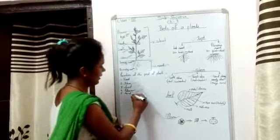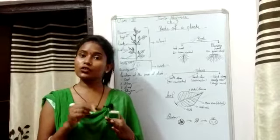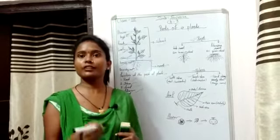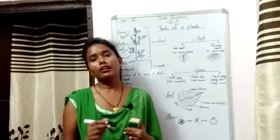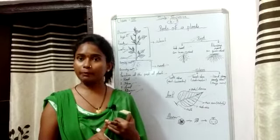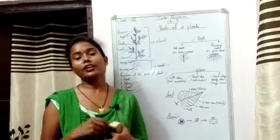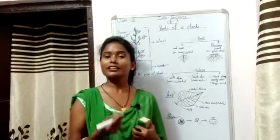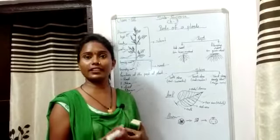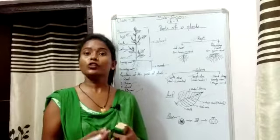Third point: Seed. The flower changes into a fruit, and the fruit contains seeds. Seeds are responsible for the reproduction of plants — if we plant a seed, a new plant grows. Some fruits have only one seed, for example, mango. Some fruits have 3 to 6 seeds, for example, apple and orange. And some fruits like papaya and watermelon have many seeds.